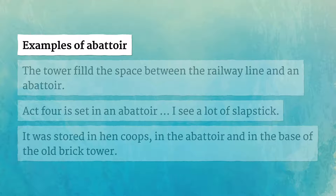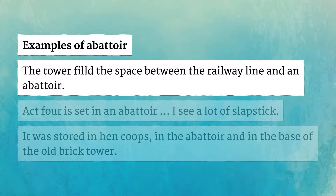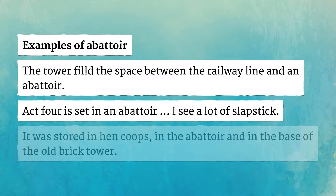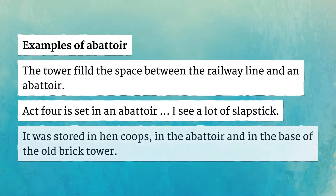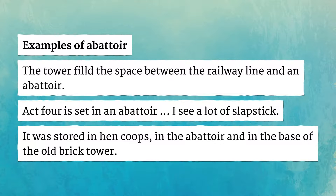Examples of abattoir. The tower filled the space between the railway line and an abattoir. Act 4 is set in an abattoir — I see a lot of slapstick. It was stored in hencoops, in the abattoir, and in the base of the old brick tower.